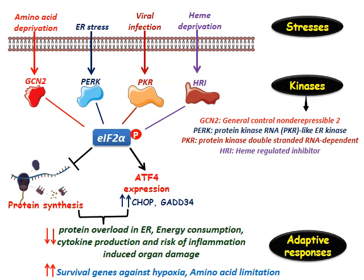The phosphorylation of the EIF2 alpha subunit is the key event in ISR. In mammalian ISR, there are mainly four serine/threonine kinases that execute this phosphorylation at serine-51 of the EIF2 alpha subunit, and each is activated under specific stressful conditions. GCN2 is activated due to amino acid deprivation; PERK in case of ER stress; PKR kinase in case of foreign RNA or DNA in viral infection; and HRI kinase due to heme deprivation. This phosphorylation leads to suppression of protein synthesis and increased expression of transcription factor ATF4, which further increases expression of stress-responsive genes like CHOP and GADD34.